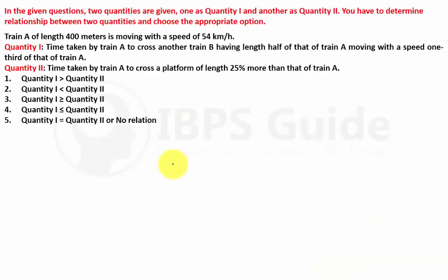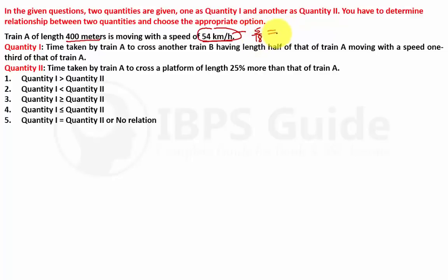The first question: Train A of length 400 meters is moving with a speed of 54 km/h. This should be converted into meters per second because length is in meters. So 54 multiplied by 5/18 gives 15 meters per second. So Train A has a length of 400 meters and a speed of 15 meters per second.